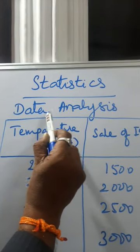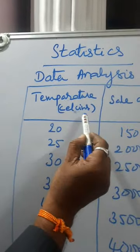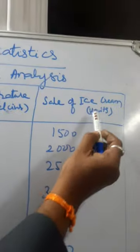Today we discuss data analysis. This is temperature in Celsius. This is sales of ice cream in units.